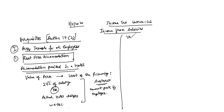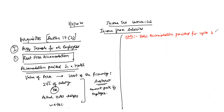That's it for this section. Now, note this important point: hotel accommodation provided for up to 15 days — if the hotel accommodation is provided for only 15 days, nothing is taxable. You don't need to do these calculations; there will be no tax on the perk at all — it will be tax-free.